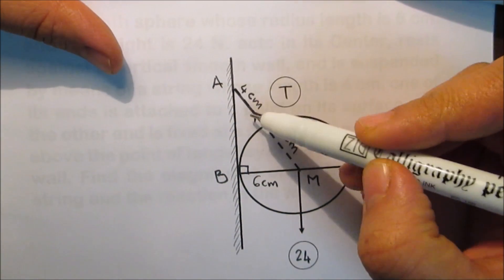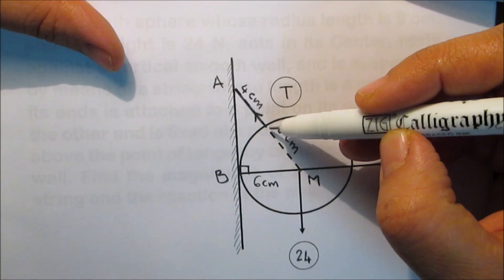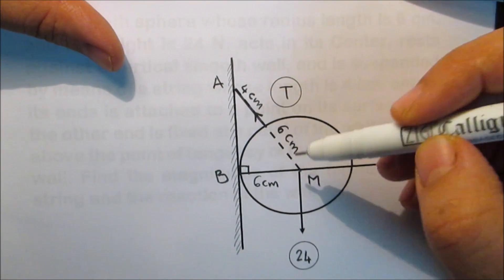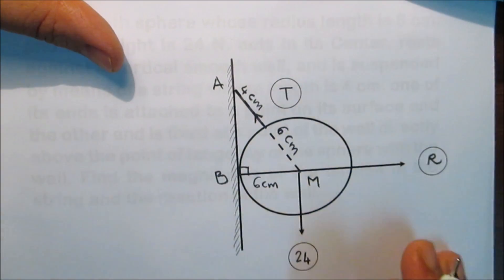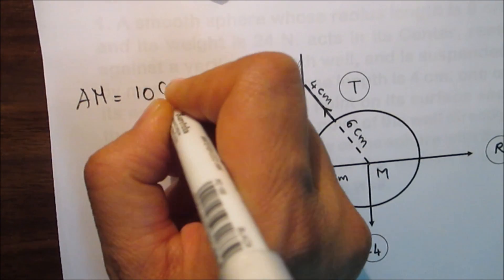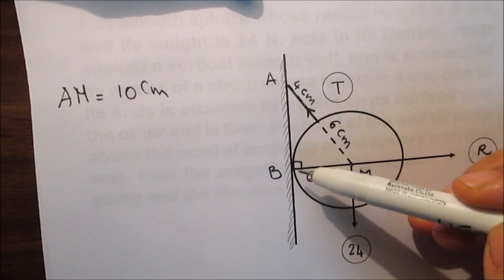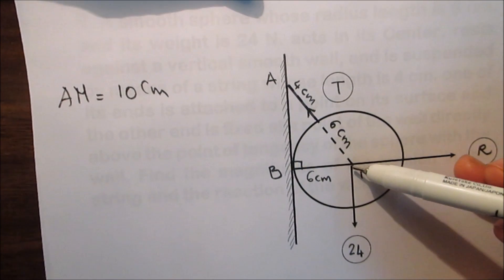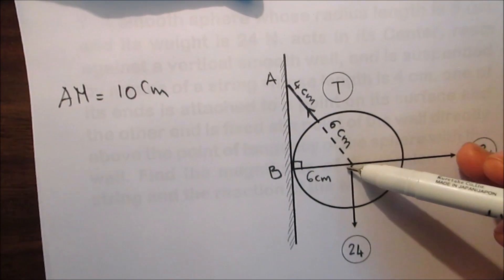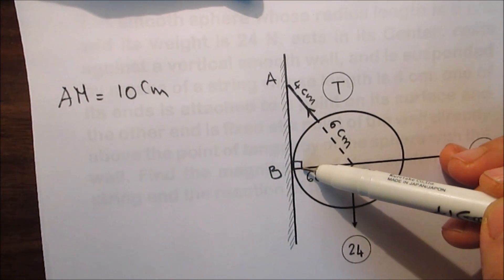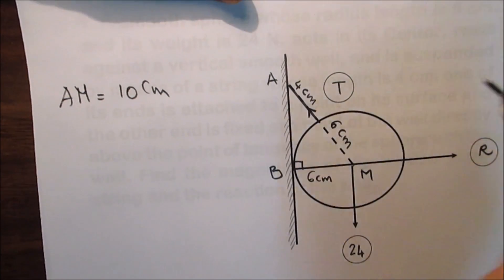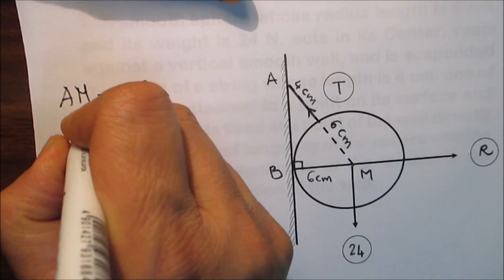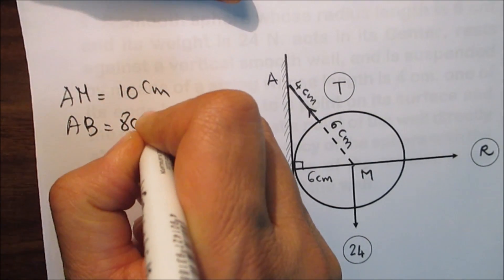The length of the string is 4 cm and the radius of the sphere is 6 cm, so AM equals 4 plus 6, which is 10 cm. In triangle ABM, BM is 6 cm and AM is 10 cm, and this is a right triangle at B. From the Pythagorean theorem, AB equals 8 cm.